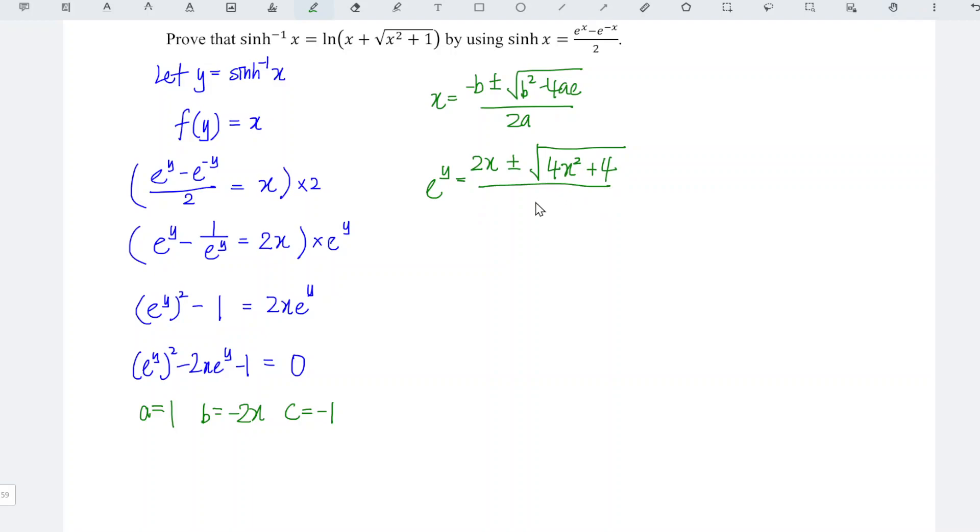Divided by 2 times 1 which is 2, and we should abandon the negative since we want the function to be defined for all real values of x. Since this is ln, which means that this part can never be negative, so we have to abandon the negative and left only the positive part.